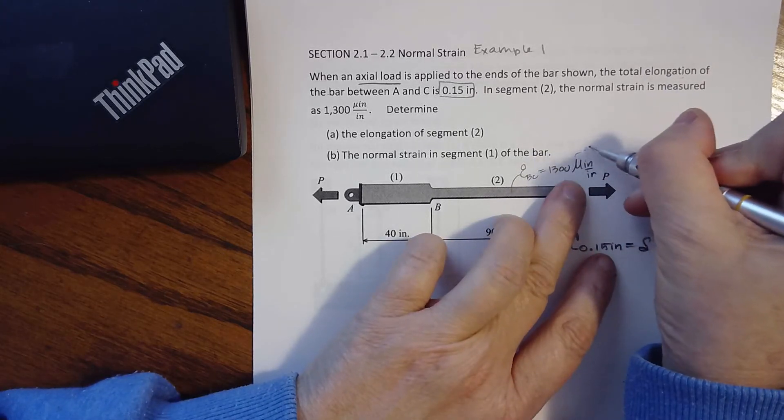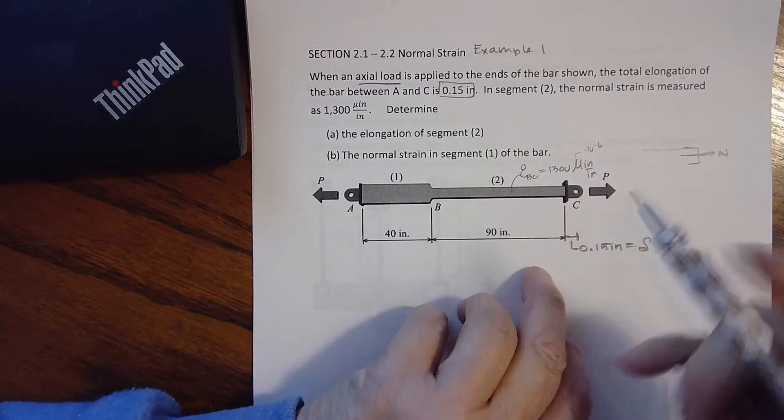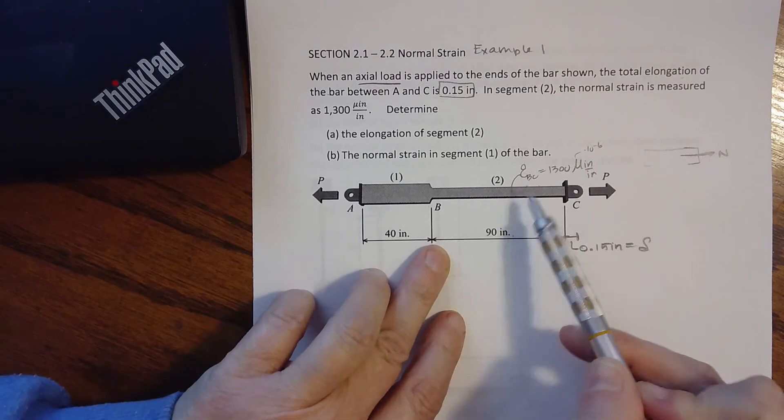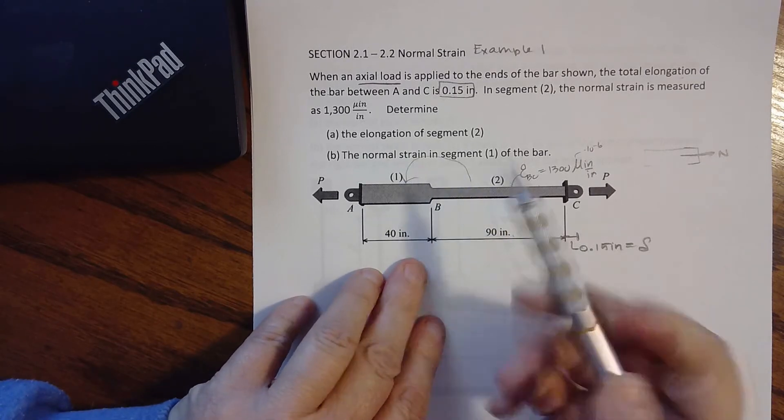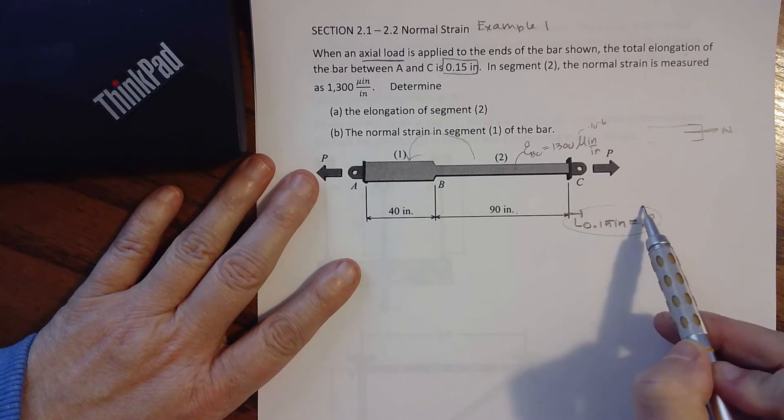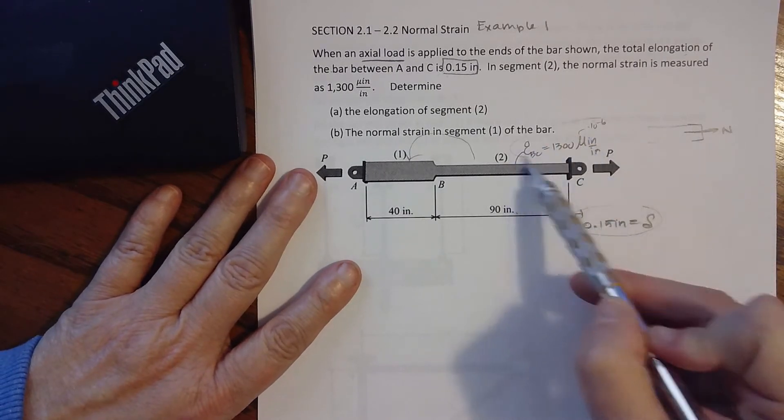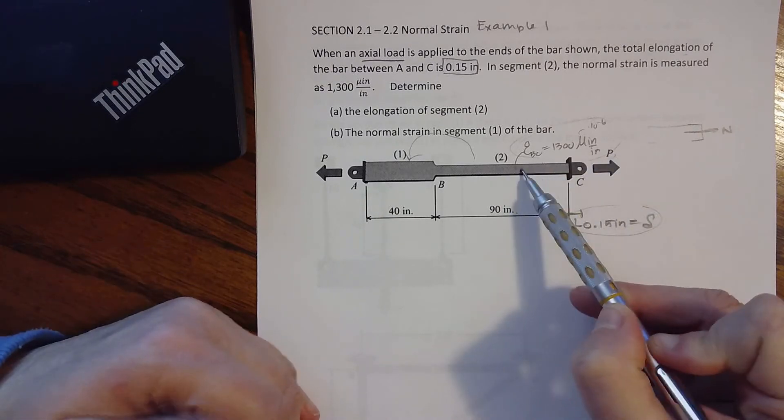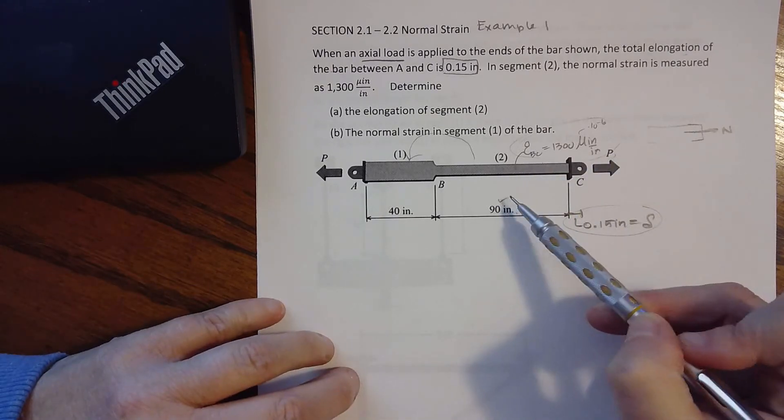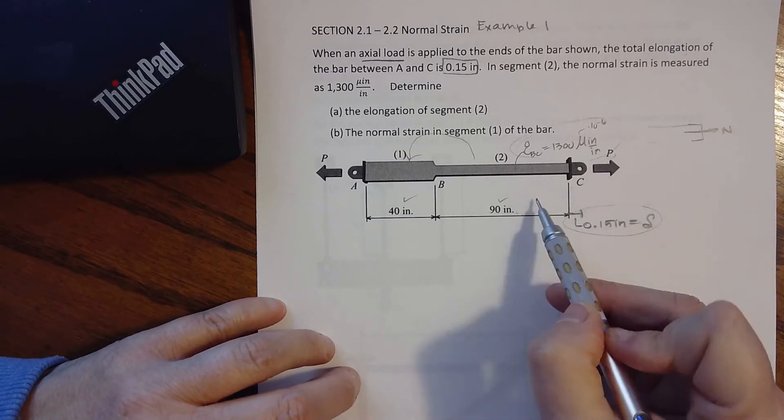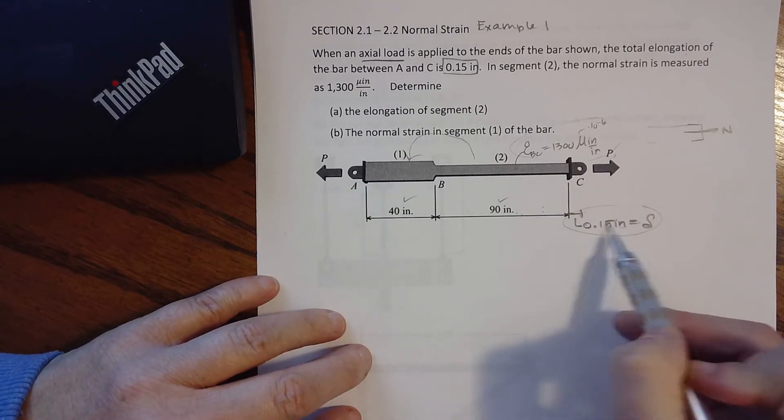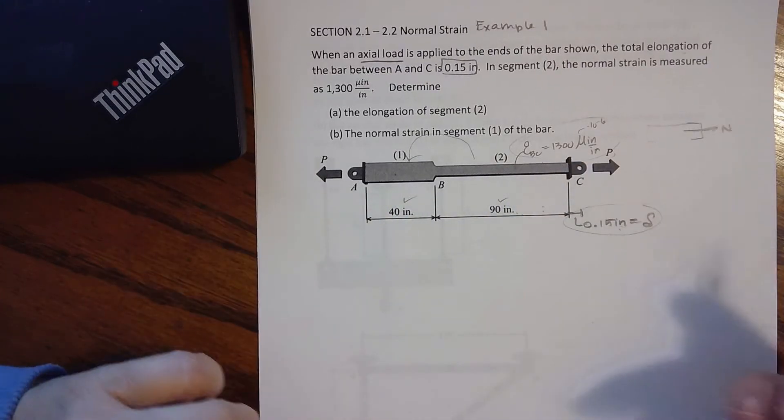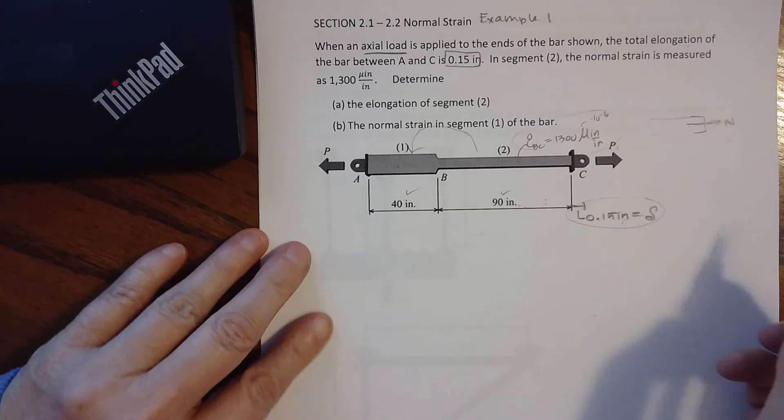It's 1300 micro strain in inch per inch, and remember that that just means times 10 to the negative 6. So determine the elongation of segment 2 and then figure out what is the normal strain in segment 1. So I know the overall change in length. If I know what the strain is, the strain is change in length per unit length. But it's the change in length over the original length. There's my originals. I can actually calculate the elongation of 2, subtract it from the total, get the elongation of 1, and then work backwards to find the actual strain.